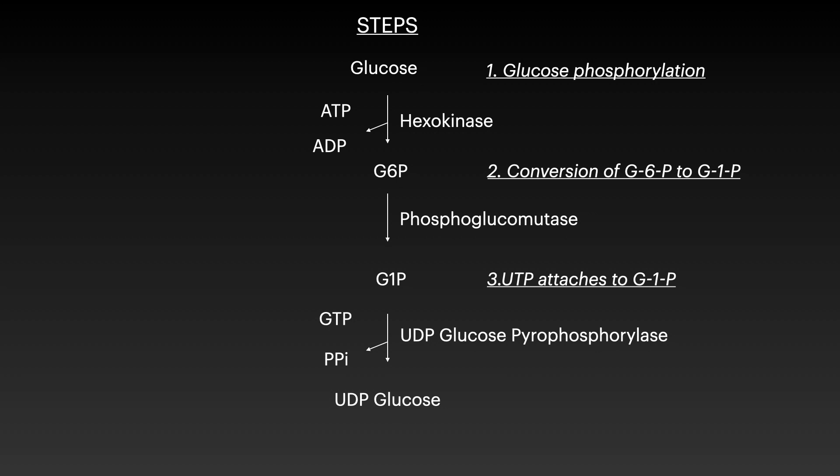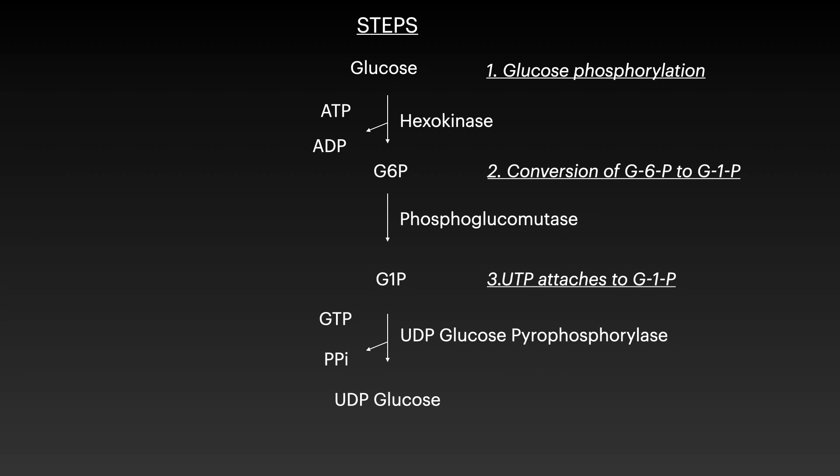The conversion of glucose-1-phosphate to UDP glucose is carried out by UDP glucose pyrophosphorylase. From the reaction, we can see the amount of phosphate being added and the removal in the form of pyrophosphate. Now we have UDP glucose, which will serve as a donor in the upcoming process.